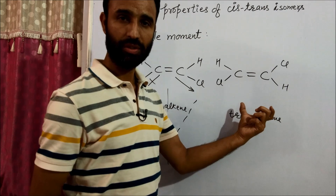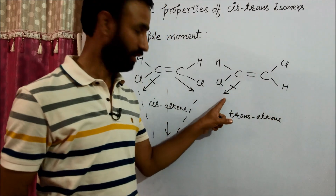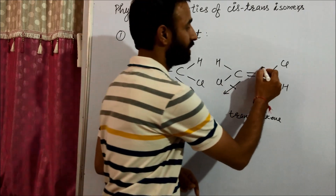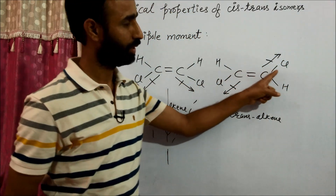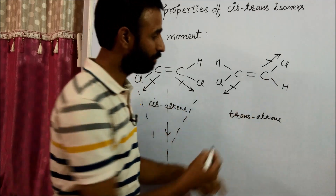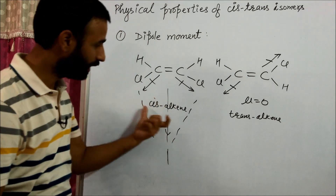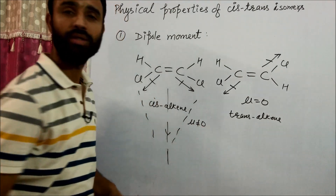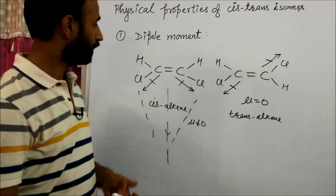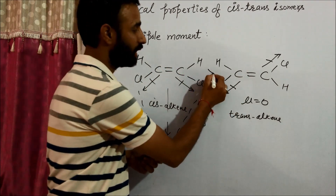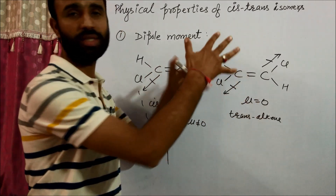What about trans? In the case of trans, the polarity due to one C-Cl bond is exactly cancelled by the polarity due to the other C-Cl bond, so the net polarity is zero. But in cis, net polarity can never be zero. That means the dipole moment of cis alkene is always greater than that of trans alkene.